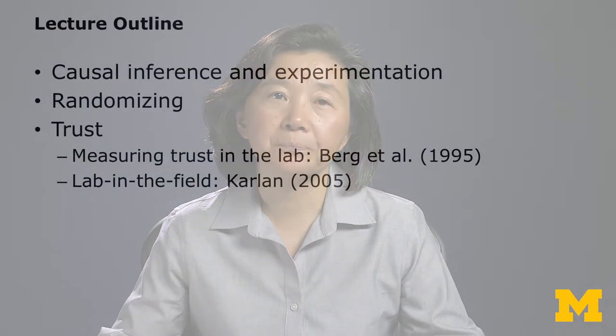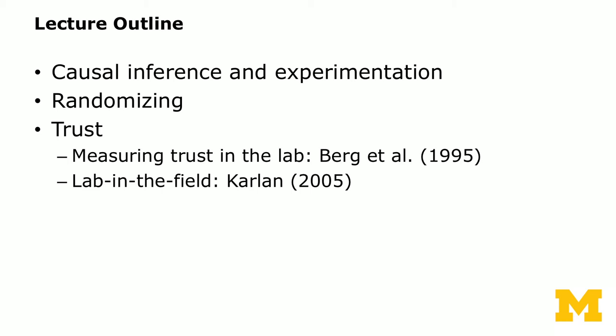Hi everyone. This week we're going to talk about different choices of randomization. We will also discuss a very well-known game called the trust game, and in general we're going to talk about how one might use lab experiments to measure certain traits in people and whether they have predictive power in the field. We will first define some notations and framework to talk about causal inference and experimentation, then discuss different methods of randomization, and go to the concrete topic of measuring trust in the lab.